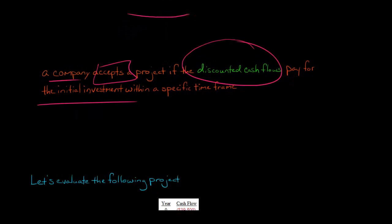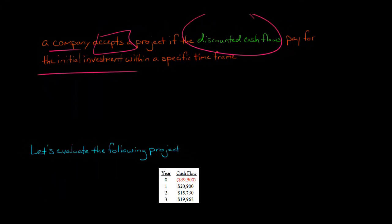Let's do an example. If we have a project with the following set of cash flows, where in year zero, that's today, we have a cash outflow of $39,500, and then we have a series of cash inflows over the next three years. We have $20,900 we receive in year one, $15,730 in year two, and $19,965 we receive in year three.